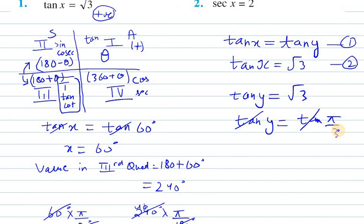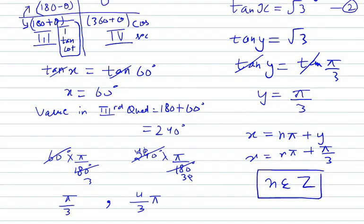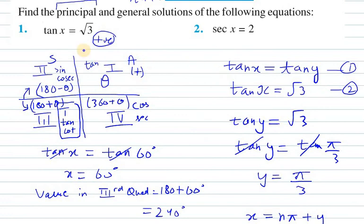And we know the general solution is x equals nπ plus y. So x equals nπ plus π/3. In this case, we need to write that n belongs to Z. So that's your answer for question number 1. Thank you for watching this video. Have a great day.